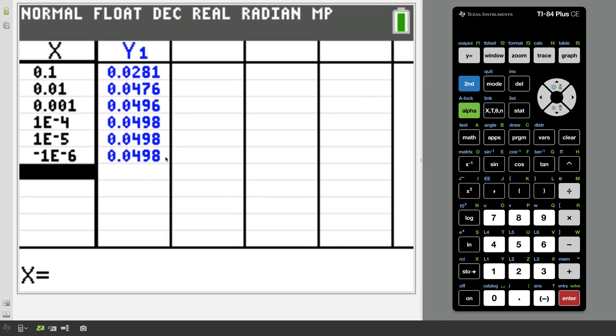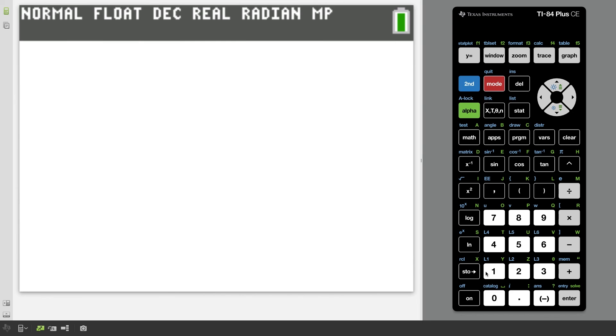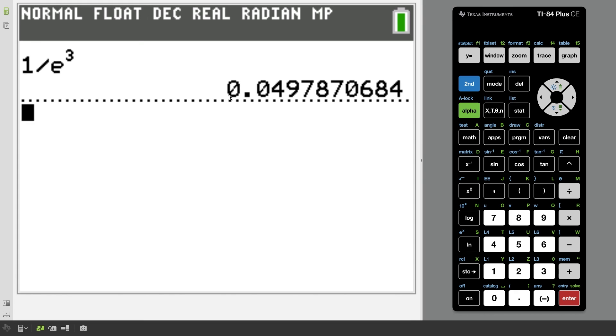And now before we said our answer was one over e to the third. So if I want to see how close is point zero four nine eight to one over e to the third, I just do one divided by e to the third power. And we press enter here and notice point zero four nine, this eight would round this up to an eight. So that tells us that our answer does in fact check out.